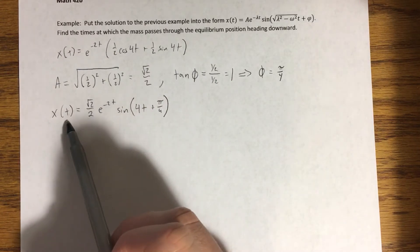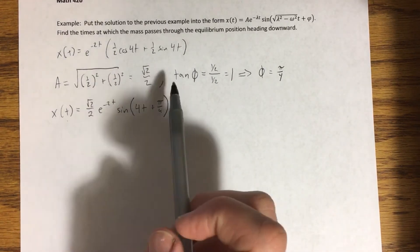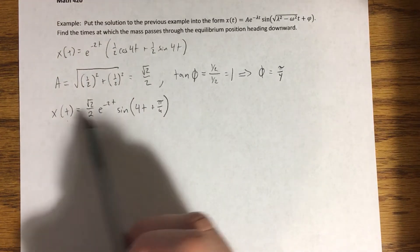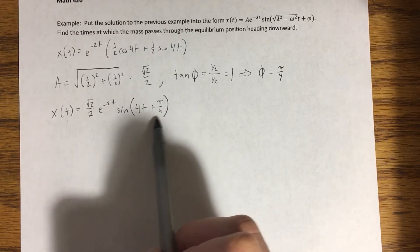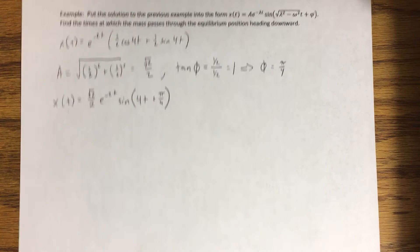Now, in order to do that, we're looking for where x is equal to zero, but specific times when x is equal to zero. And notice that if x is going to equal zero, this factor can't equal zero. So that means that sine of 4t plus pi over four is what we're going to be setting equal to zero.